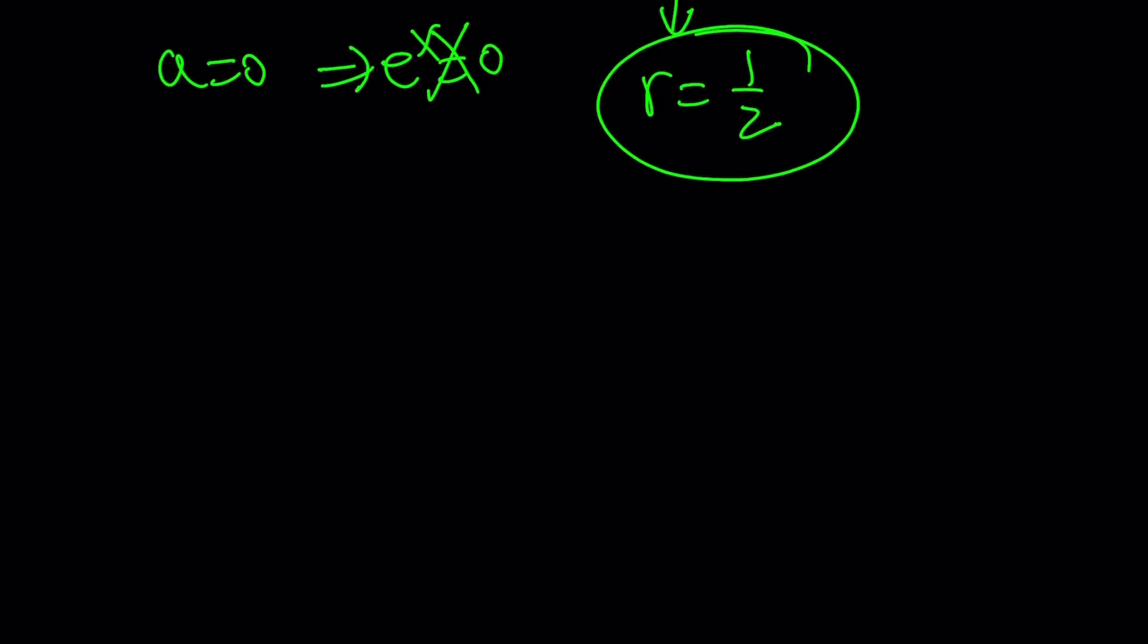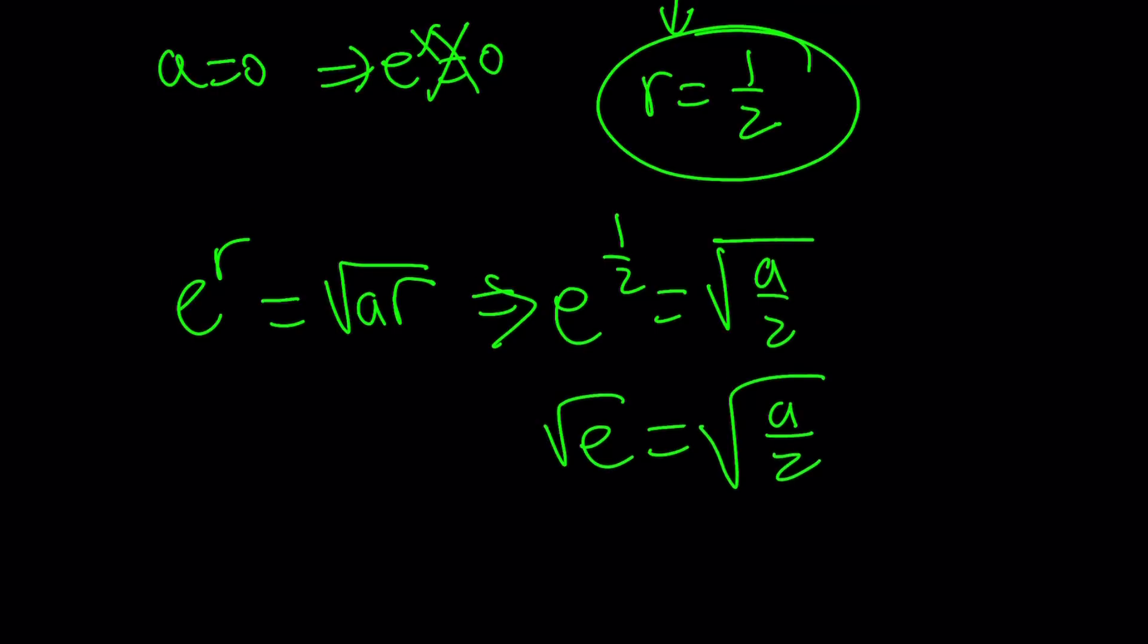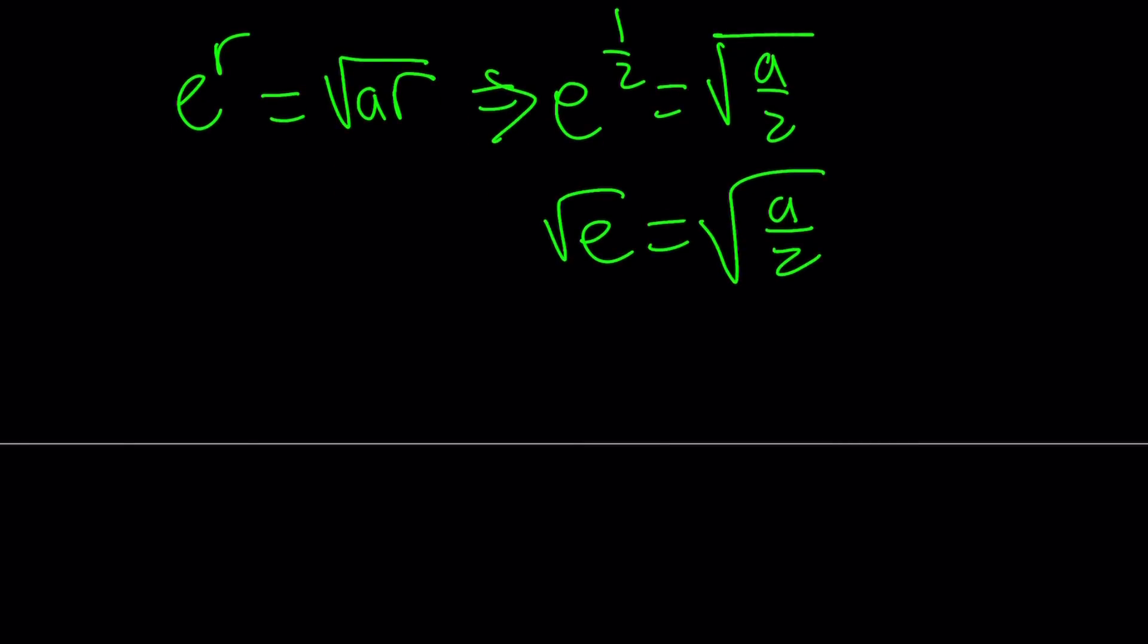Well, we do know that we have an equation, right? e to the r equals square root of ar. And we know that r is equal to one half. So let's go ahead and replace r with one half. e to the power one half equals square root of a times one half, which is half of a. Great. e to the power one half is the same thing as square root of e. So we got square roots on both sides. We can go ahead and square both sides. And this gives us a over 2 equals e.